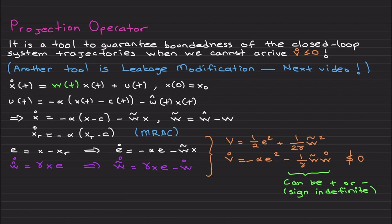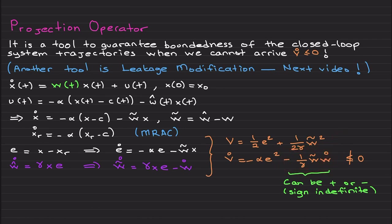If you use this Lyapunov function candidate and perform the same steps as in the previous video, you arrive at this negative term and this one. In the previous video — reference point versus reference model — we didn't have the ẇ term because ẇ was zero. However, because we have this term and it can be positive or negative, it is sign-indefinite. We cannot say v̇ ≤ 0.